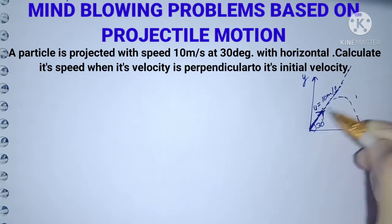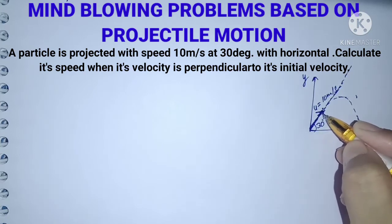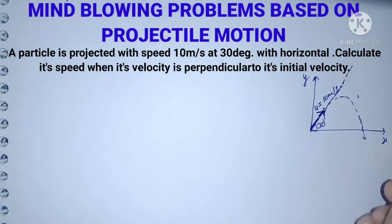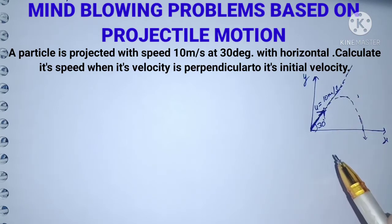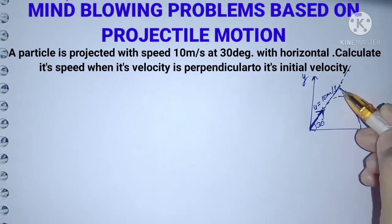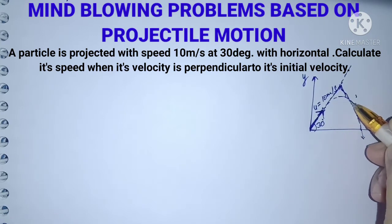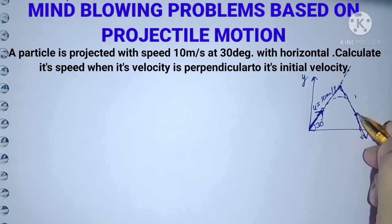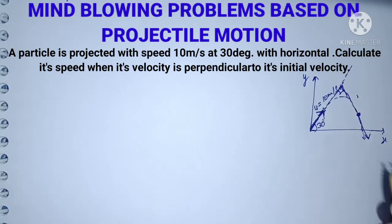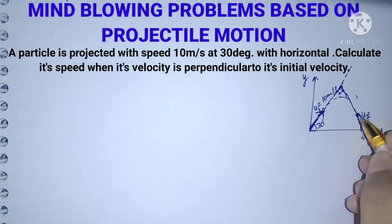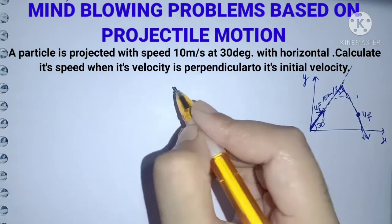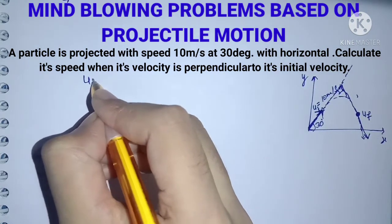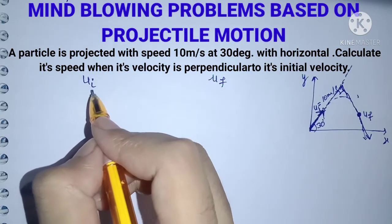We draw a straight line for the initial velocity, extend it, and make a 90-degree angle. The particle is here, with a 90-degree angle between the final and initial velocity. Now we write the velocities in vector form — what will be the horizontal and vertical components of the final velocity?